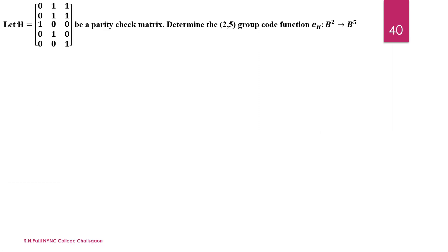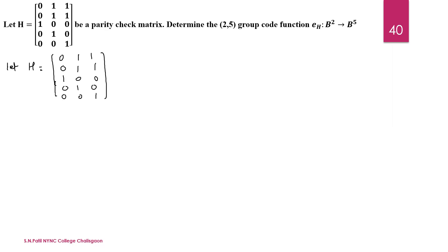Let H be equal to 0,1,1 and 0,1,1. The remaining part is the identity matrix: 1,0,0 then 0,1,0 then 0,0,1. This is the parity check matrix H.